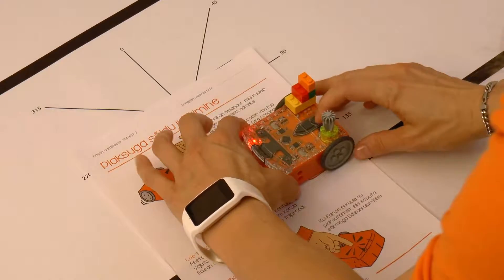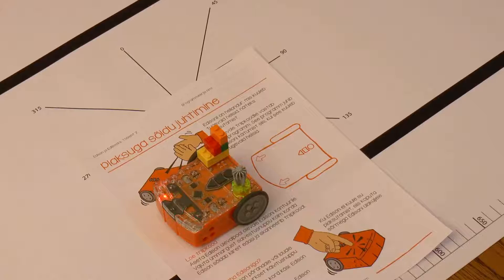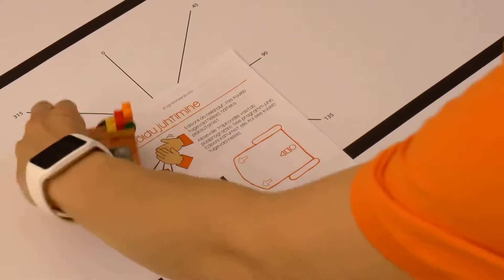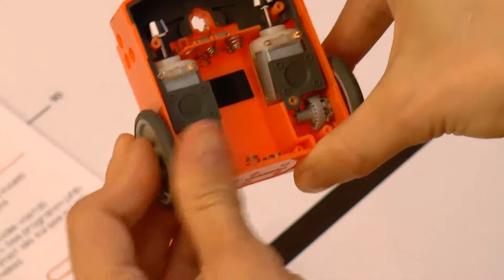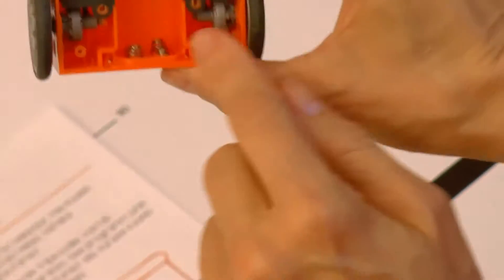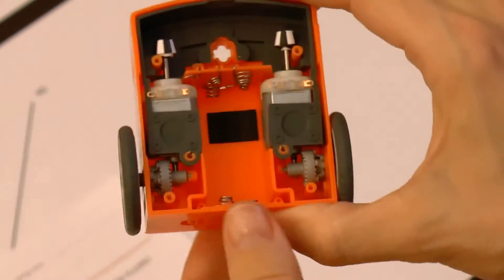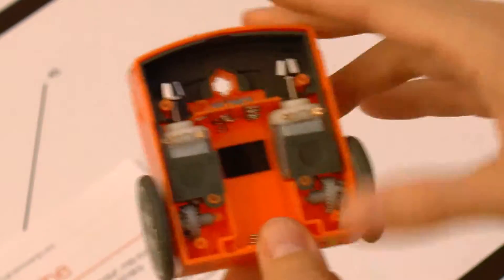If Edison doesn't drive over the barcode straight but swerves right or left, then the wheel isn't properly connected or the motor's transmission mechanism is worn out. In this case, you need to get the spare parts package, screw Edison open and replace the worn transfer mechanism.